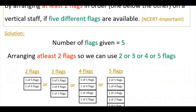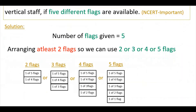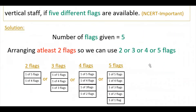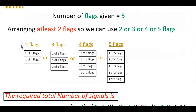This is the meaning of 'at least two flags.' You can arrange either two flags one below the other, or three flags one below the other, or four flags, or all five flags. You have to find the total required number of different signals — meaning you must find the count for each arrangement: two flags, three flags, four flags, and five flags.